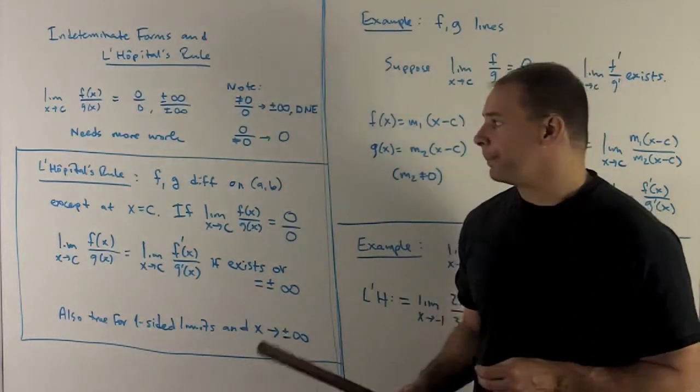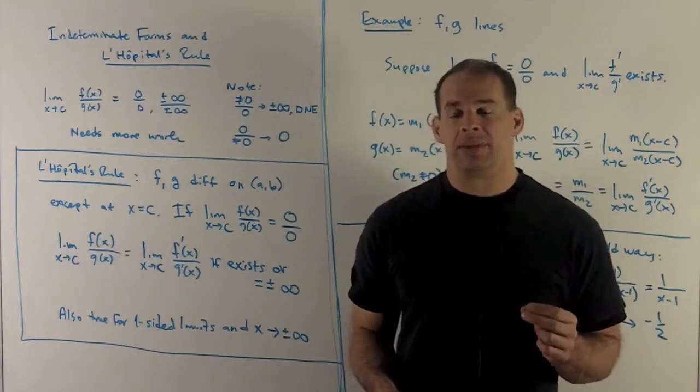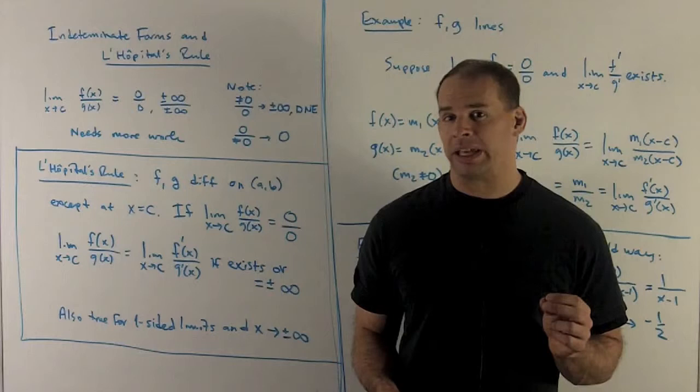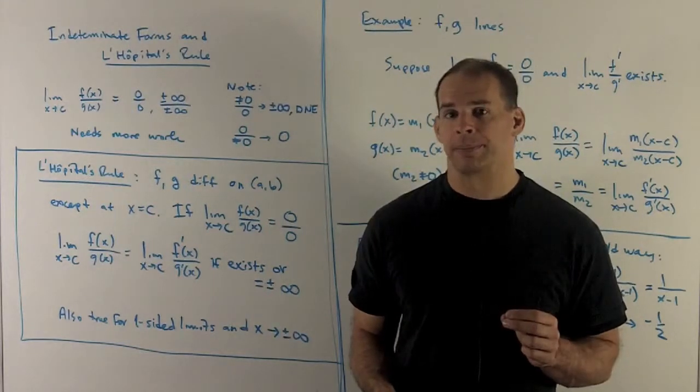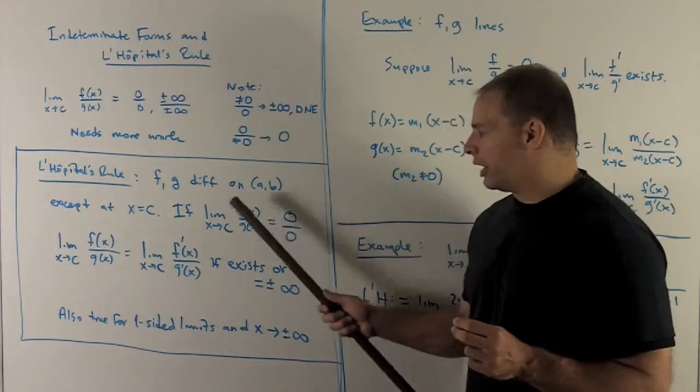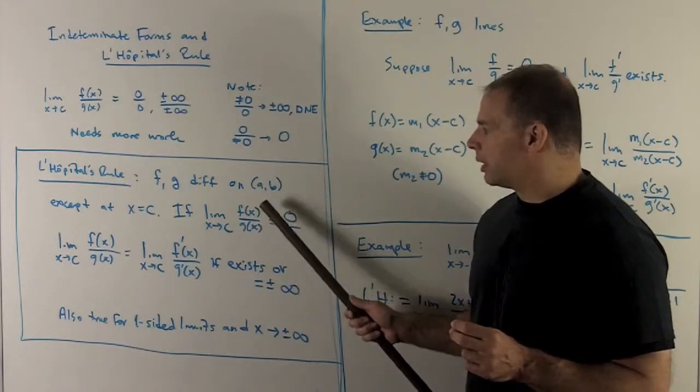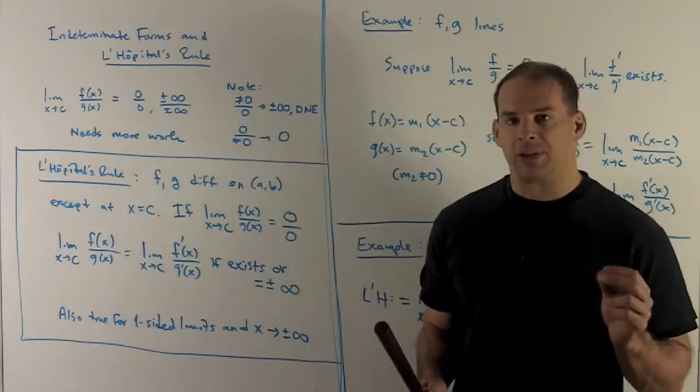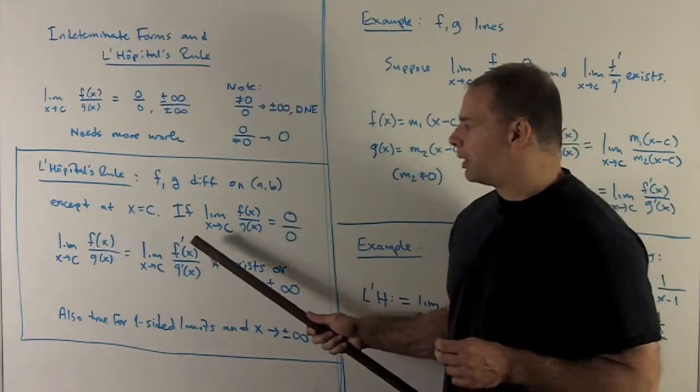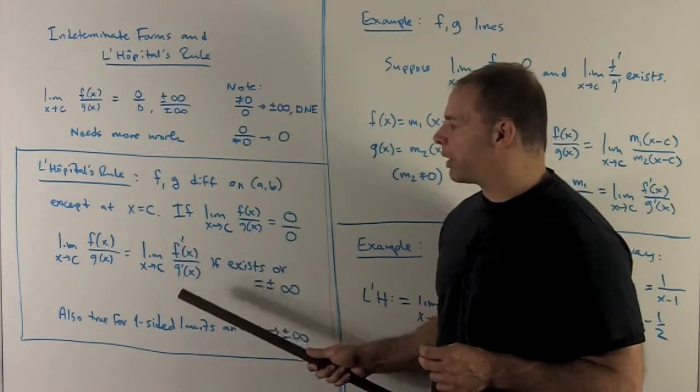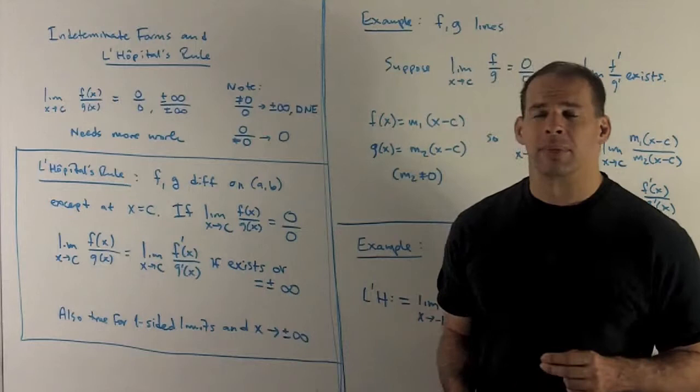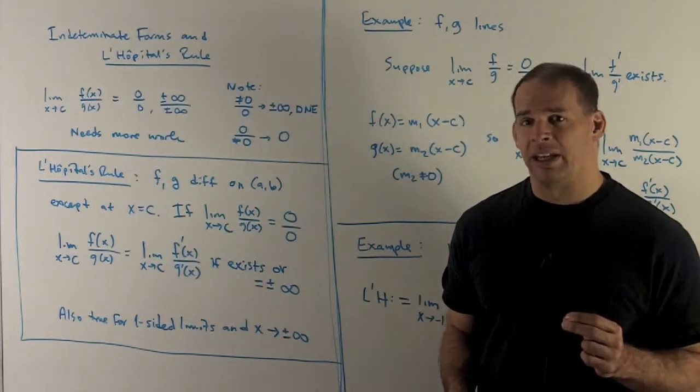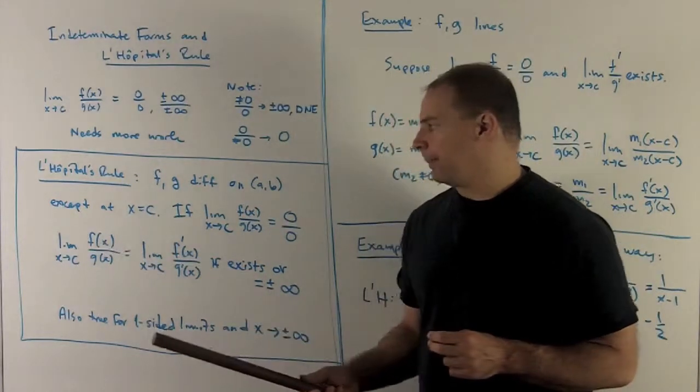Let's take a look at the statement. I have f and g, differentiable functions on the interval a, b, except at possibly x equal to c. We're going to take a look at our limit of the quotient, and I get my indeterminate form 0 over 0. What I'll do is compute the limit of f prime over g prime as x goes to c. That limit exists or is equal to plus or minus infinity, and that will be the same as our original limit.